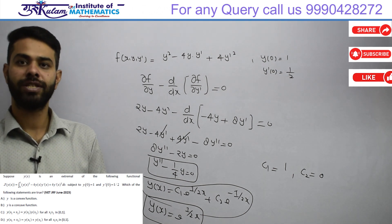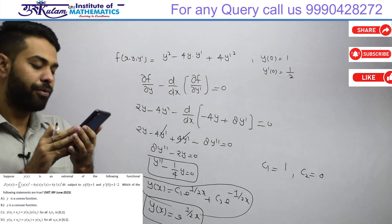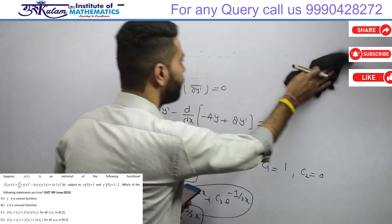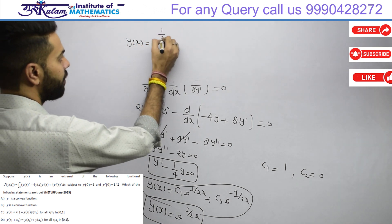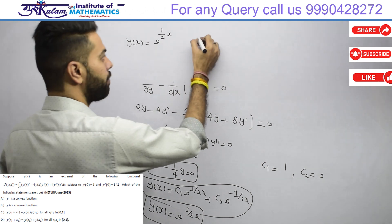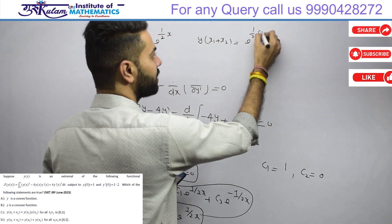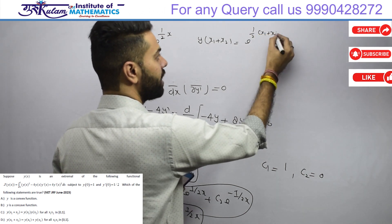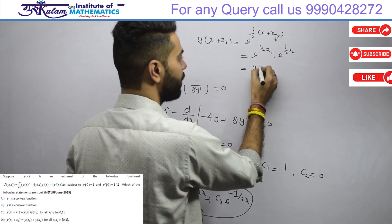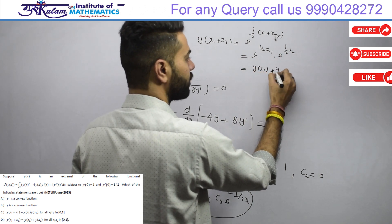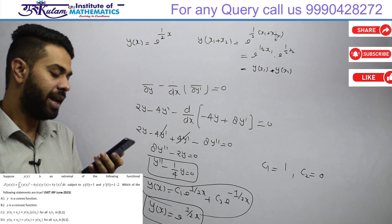तो extremal y(x) = e^(x/2) आता है। Exponential functions हमेशा convex होते हैं, तो first option true है और second option false है। Third option के लिए: y(x₁ + x₂) = e^((x₁+x₂)/2) = e^(x₁/2) · e^(x₂/2) = y(x₁)·y(x₂), तो third option भी true है। Fourth option false है। Answer is A and C।